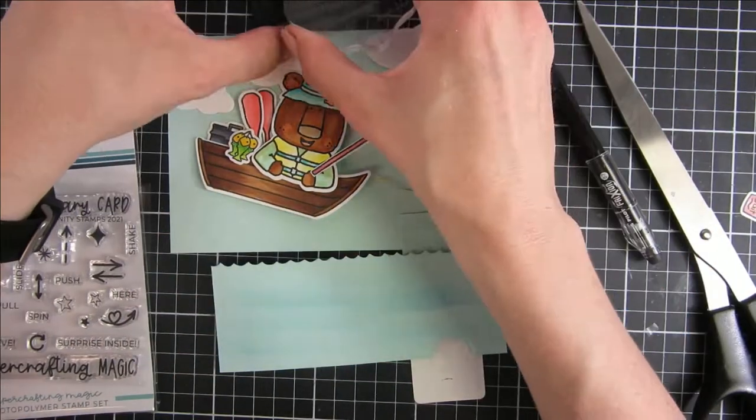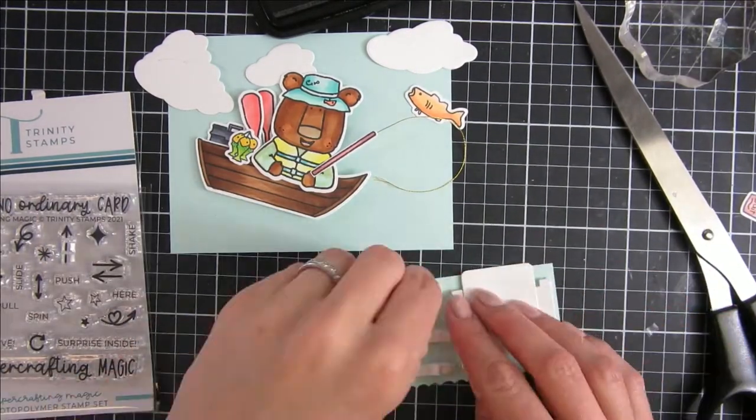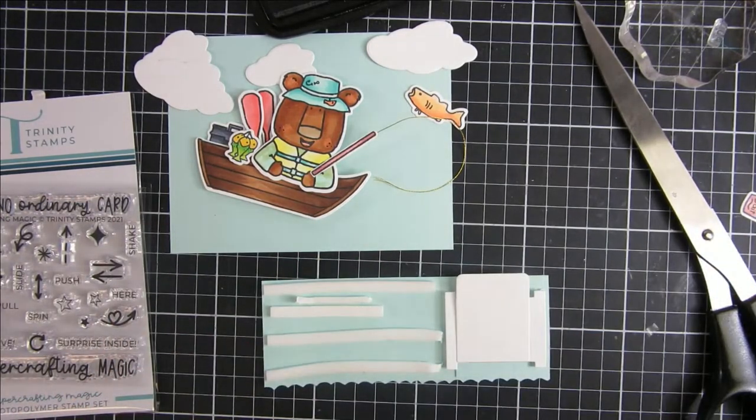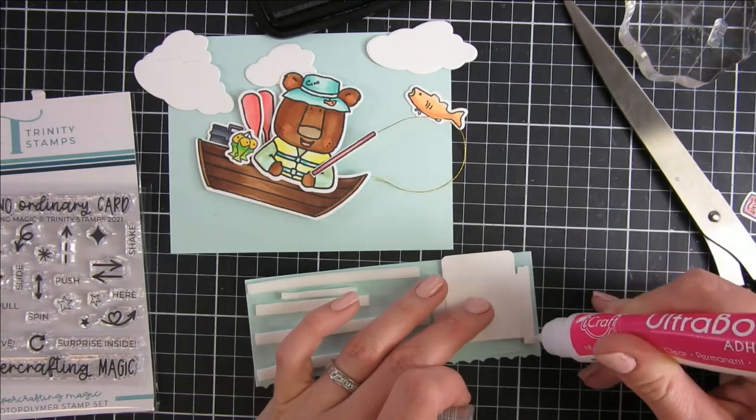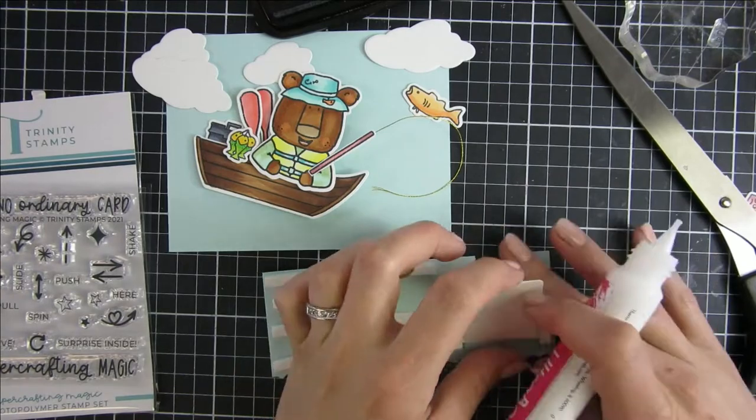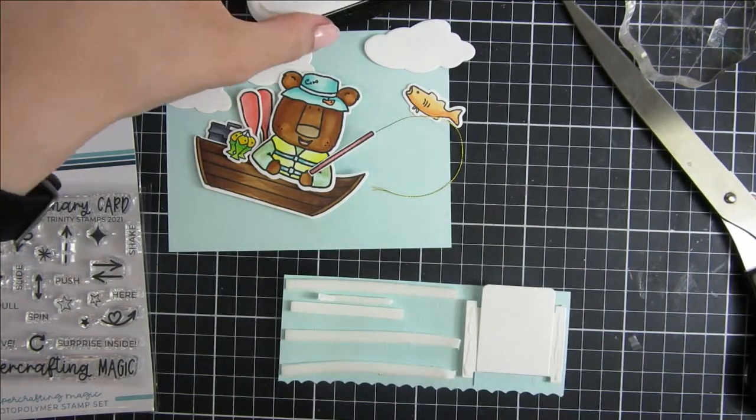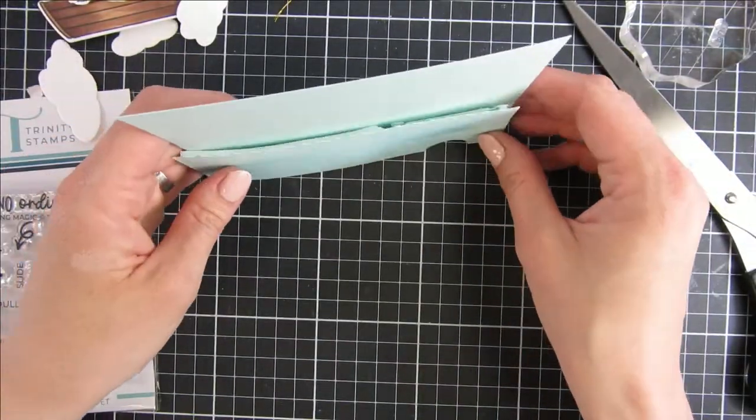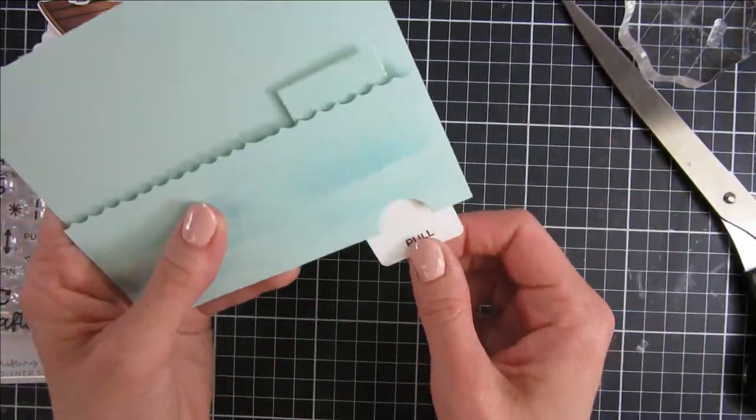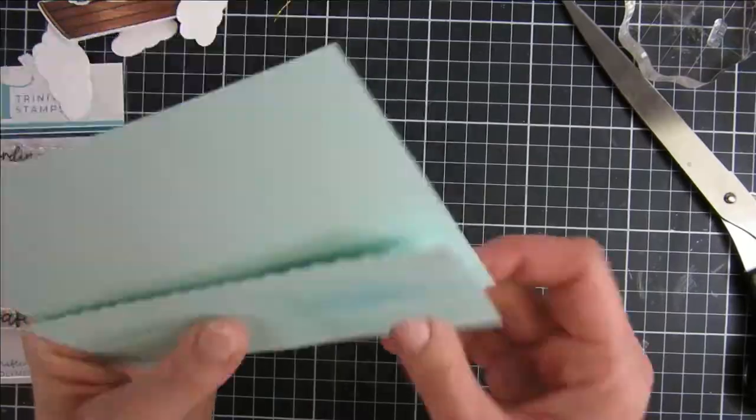I pulled out a Trinity Stamps set that is for interactive cards. I took the stamp set Pull and stamped that out. I took some more double-sided adhesive and some glue, making sure that I don't glue my moving parts to the card. Now I will adhere this to the base card, and that is pretty much it for the mechanism. You can see everything moves nicely.